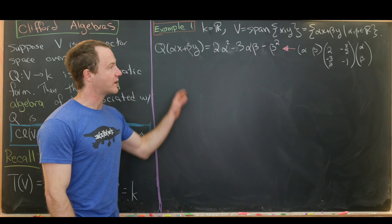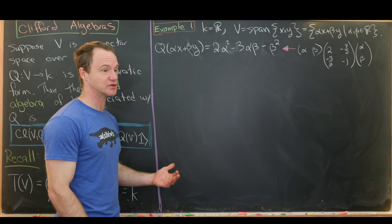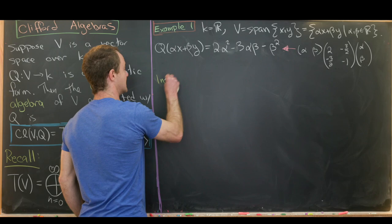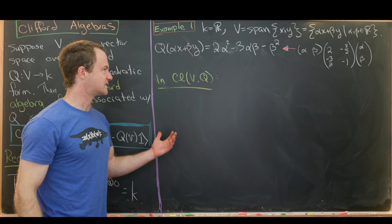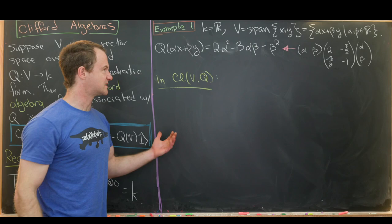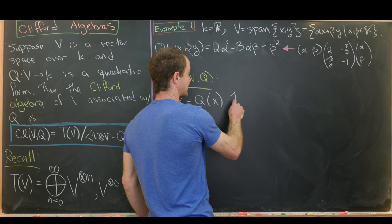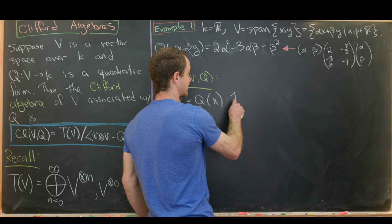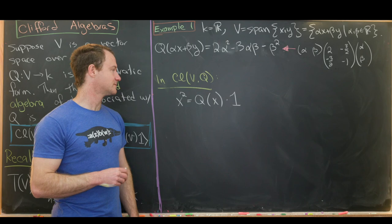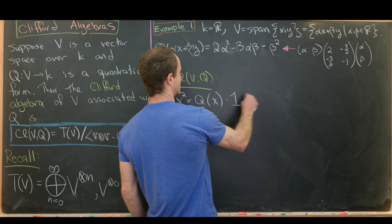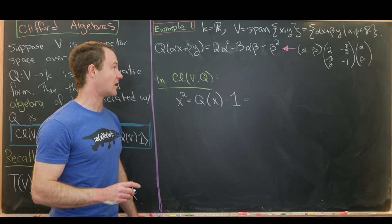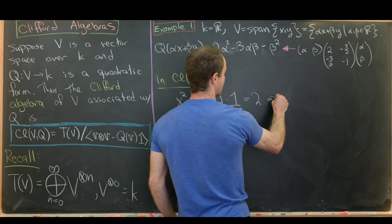Let's do some sample calculations within this Clifford algebra CL(V,Q). What is x times itself? We know that x² should equal Q evaluated at x times 1. Notice that if we evaluate Q at just x, that's like having β equal to 0 and α equal to 1. So we just get the number 2. In other words, we just have the relation that x squares to 2.